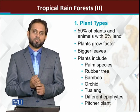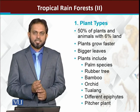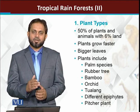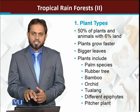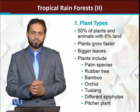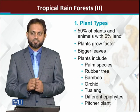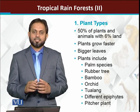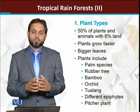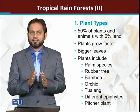Approximately half a million — five lakh plant species — have been reported, of which two and a half lakhs are tropical rainforest plant species. Most of the plant species present in tropical rainforests have bigger leaves, they are evergreen plants, and their growth is very fast as environmental conditions are optimum.